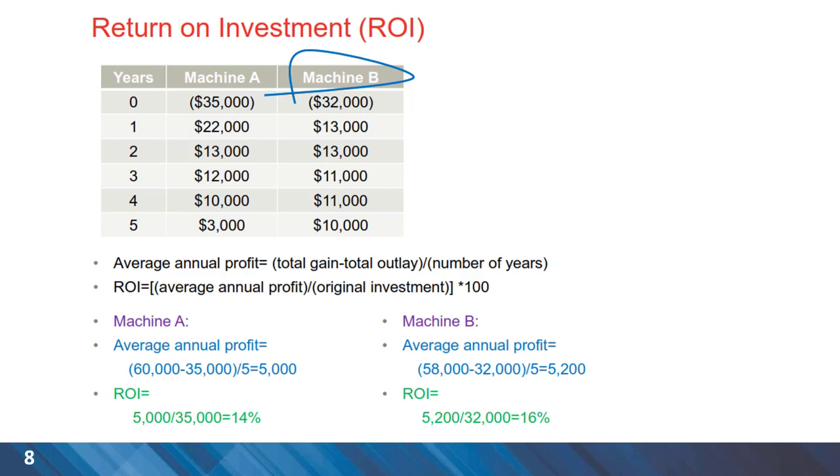Another model that we can consider using is return on investment, or in short, ROI. What we have here is a comparison between the two machines. Machine A has an average annual profit calculated: $60,000 is the sum of the profits over five years, minus the initial investment of $35,000, then divided by the five-year period, gives us an average annual profit of $5,000.